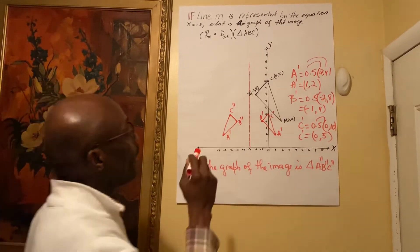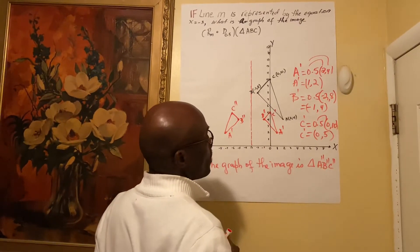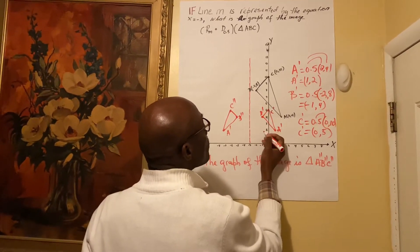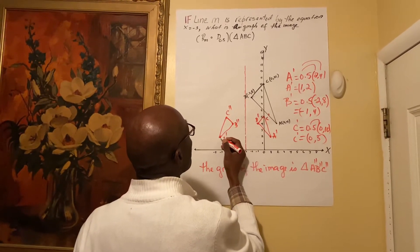Now, let's count the distance from A' to the line of reflection. 1, 2, 3, 4. Then 1, 2, 3, 4.